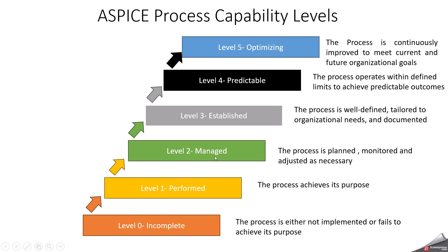Level 2 is named as managed. The process is planned, performed, monitored, and controlled. There is evidence of defined procedures and consistent execution in level 2.